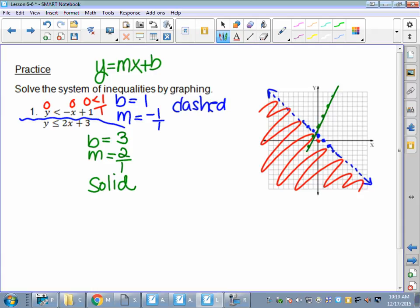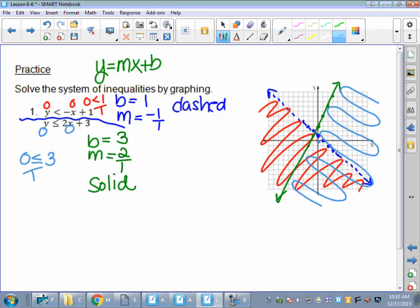Y-intercept is 3. Slope is 2 or 2 over 1. And this time, dashed or solid line? We're going to go with the solid because it is less than or equal to. Or equal to is your keyword for a solid. So I'm going to start with my b at 3. My slope is up 2 over 1, and I could go down 2 and left 1. I'm going to connect those with a line. Use a ruler. And I'm going to do a test point.